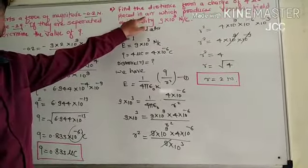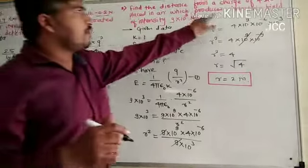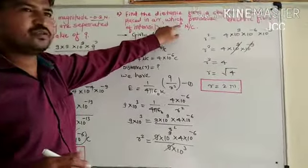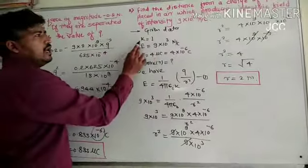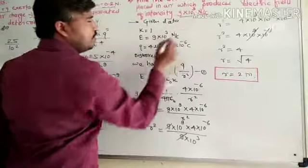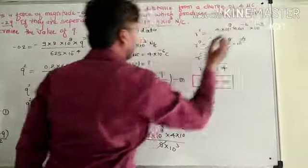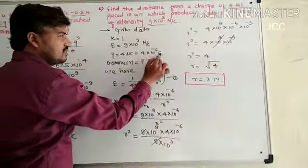Placed in a medium with K value 1, which produces electric field intensity 9 into 10 raise to 3 Newton per coulomb. K equal to 1, E equals 9 into 10 raise to 3 Newton per coulomb. Q means charge, 4 micro coulomb. Micro coulomb to coulomb would be 4 into 10 raise to minus 6 coulomb.